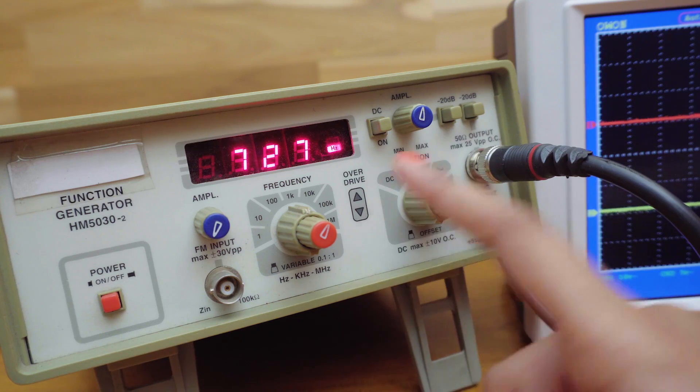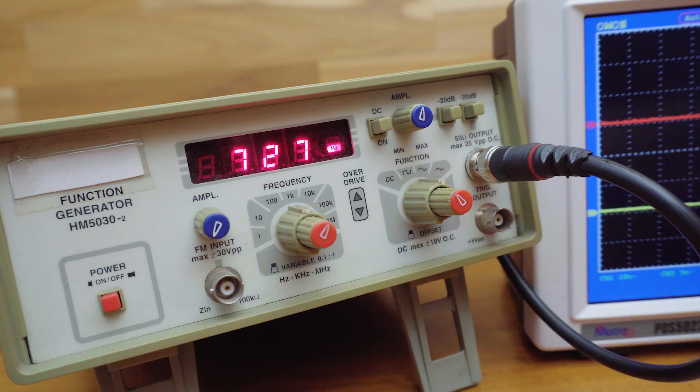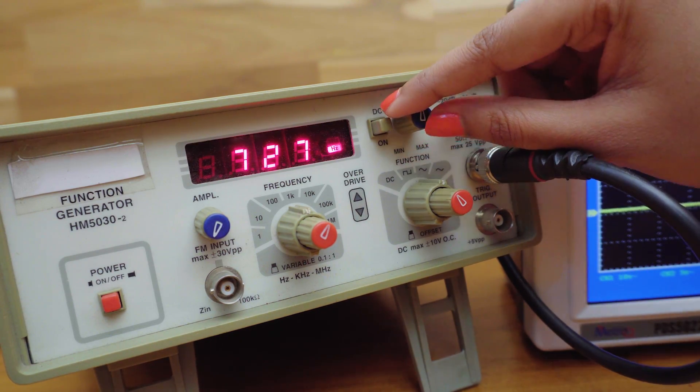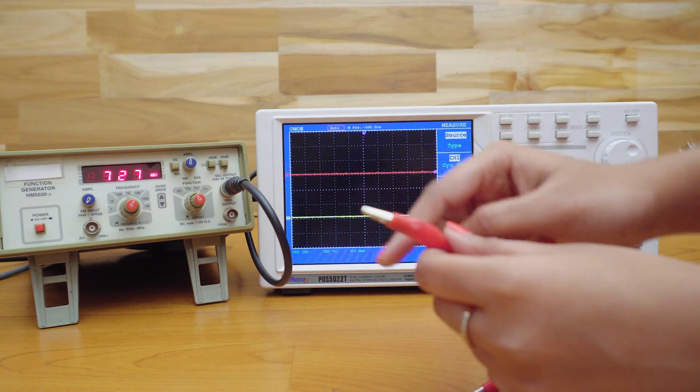square wave, sine wave and triangular wave. The amplitude level can be changed using this knob. Let's connect it to the oscilloscope.